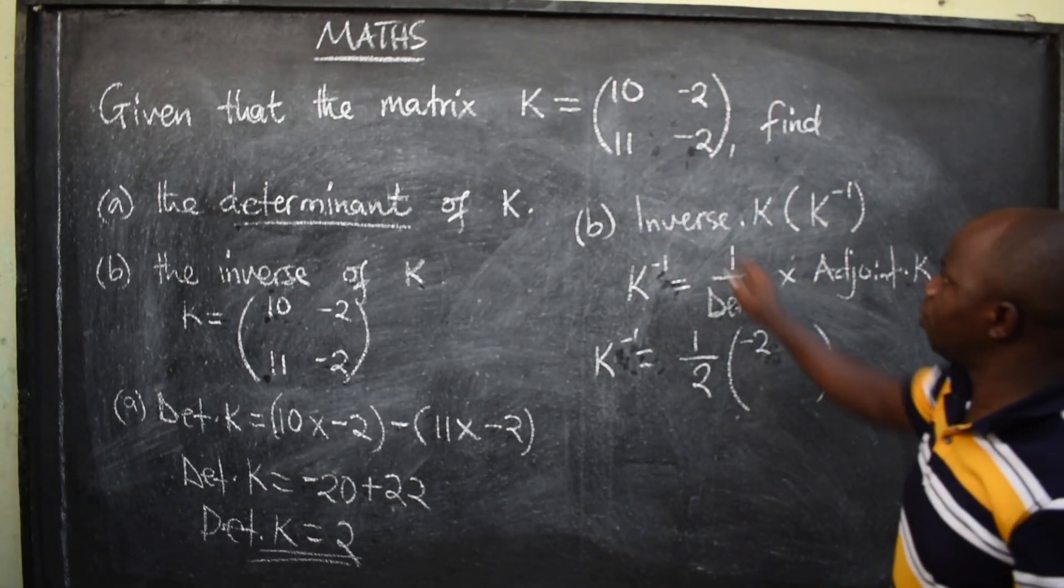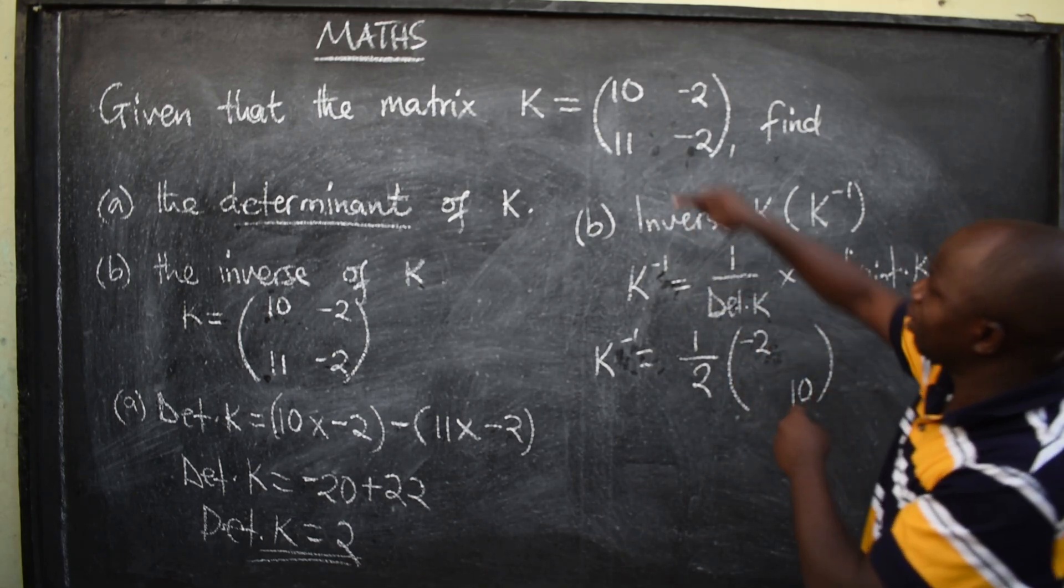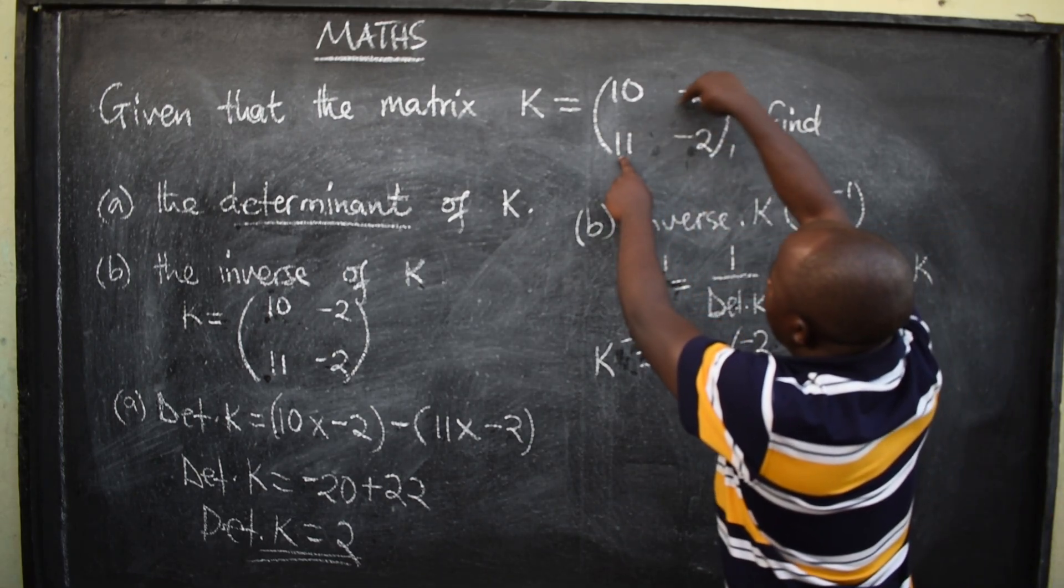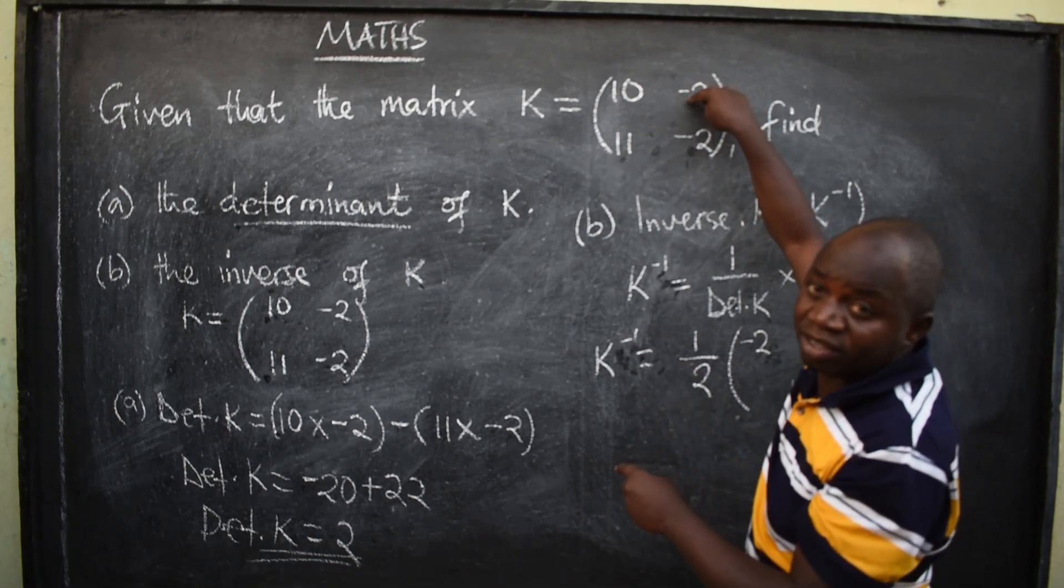I'm going to have negative 2 here, then 10 here. You swap them. Then, the minor, do not swap them, but change their signs.